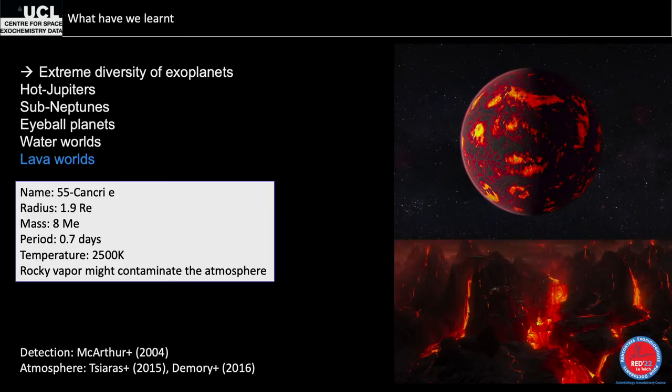55 Cancri e is a lava planet — slightly larger than Earth, orbiting in just 0.7 days at about 2,500 Kelvin. At those temperatures, the rocky surface vaporizes, creating a lava ocean, and that vapor contaminates the atmosphere. Observing such an atmosphere could reveal rocky elements like titanium or sodium, potentially linking to the planet's internal structure and formation history. An HCN detection was claimed, but another paper said there's no atmosphere at all.